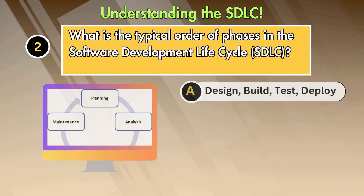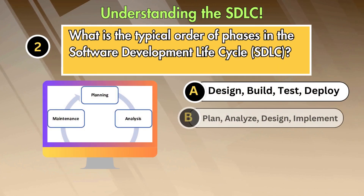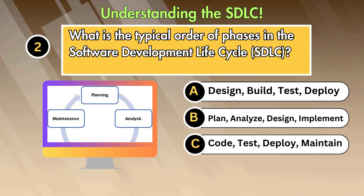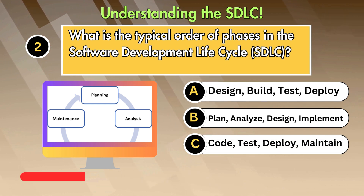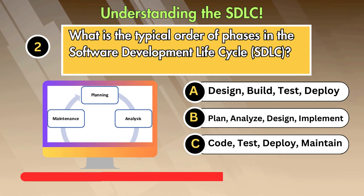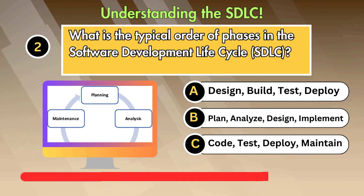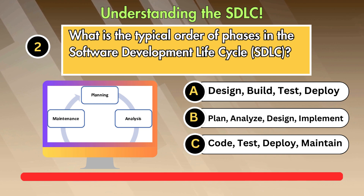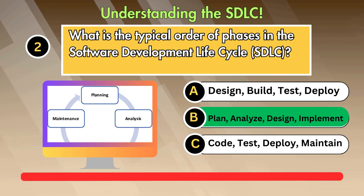Question 2: What is the typical order of phases in the software development lifecycle (SDLC)? Answer is: Plan, Analyze, Design, Implement.